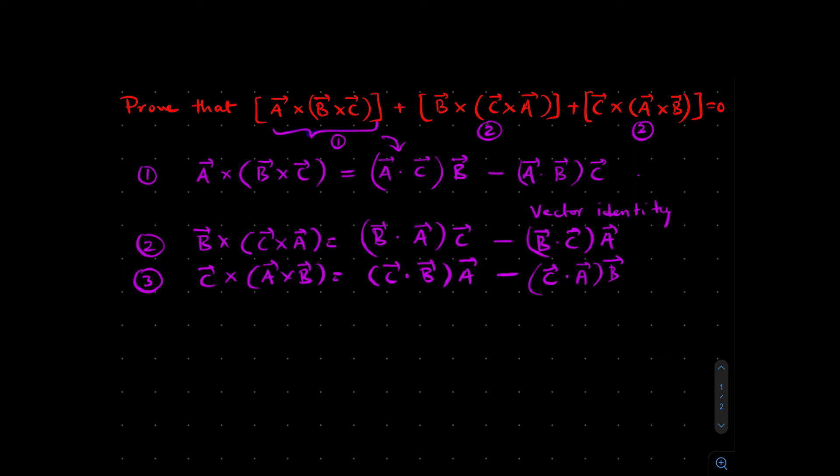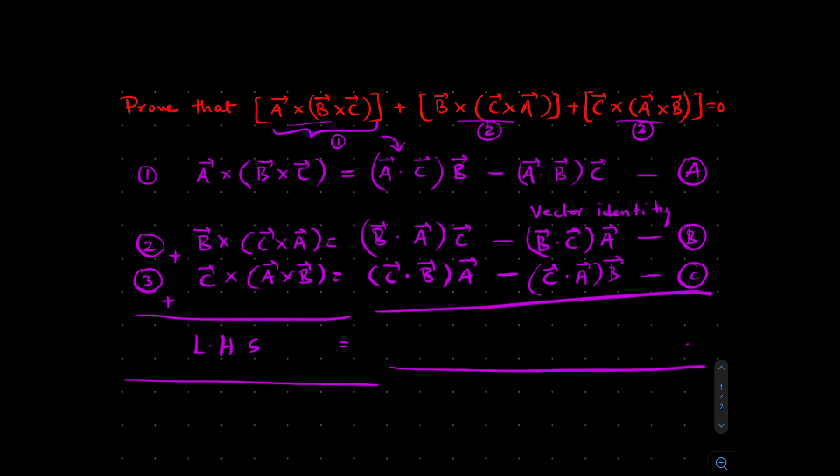So now we have equations 1, 2, and 3. All that we have to do is basically add up one, two, and three. Adding all these three basically gives us the LHS from the question. So this forms the LHS. Now, similarly, we add up the right side. Let's see how that turns out.